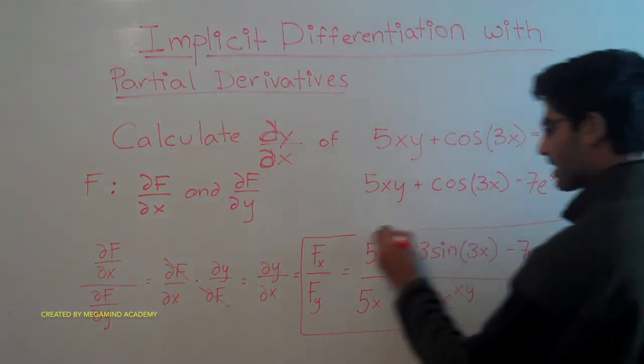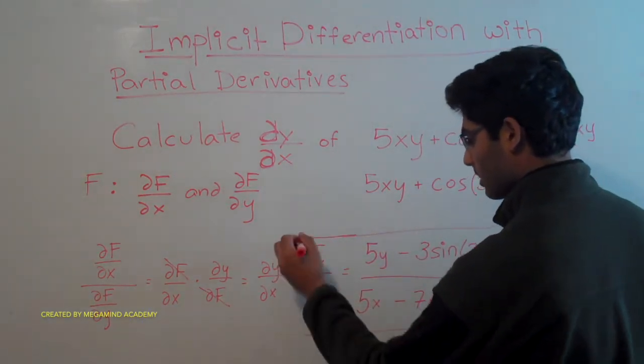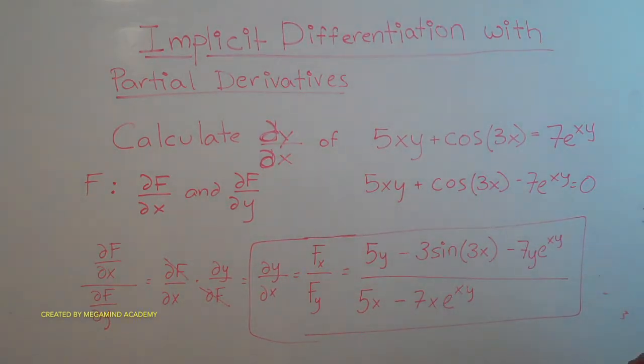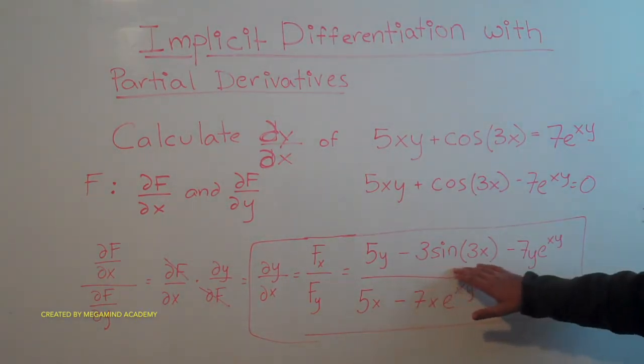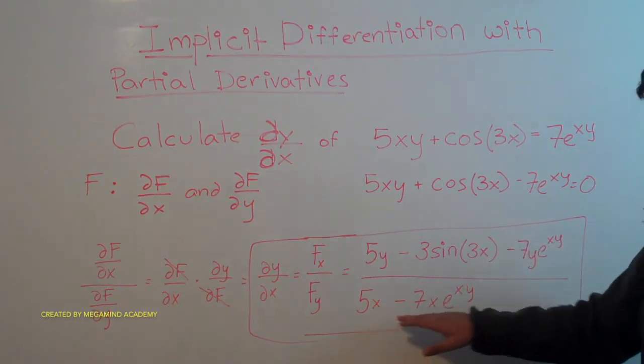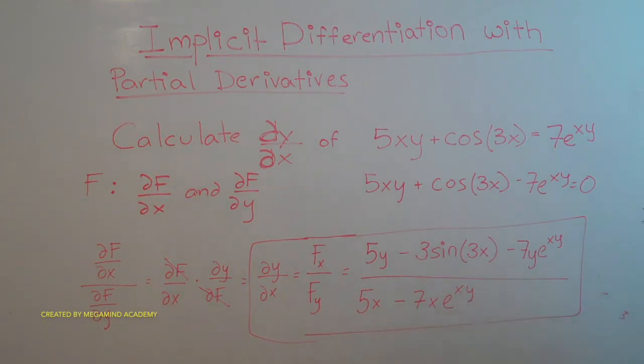So this gives us dy/dx. So dy/dx from this problem is equal to 5y minus 3 sine of 3x minus 7y times e to the xy power, all over 5x minus 7x e to the xy power.